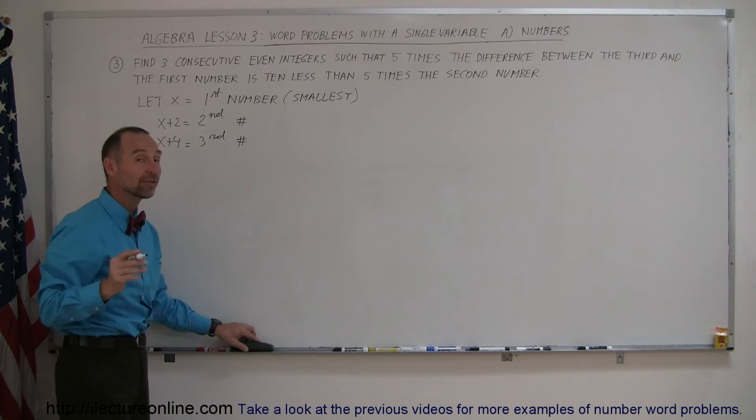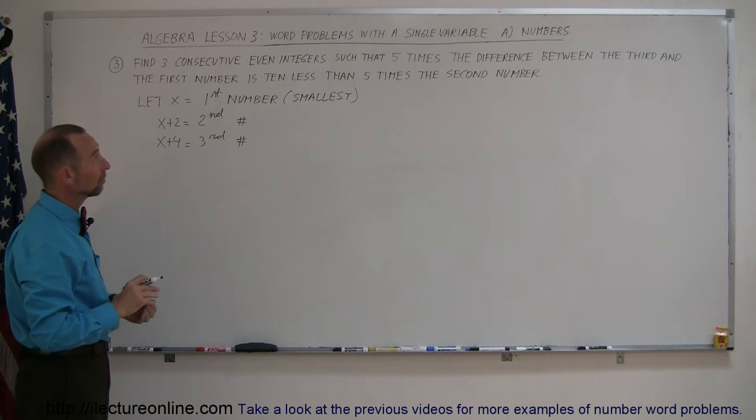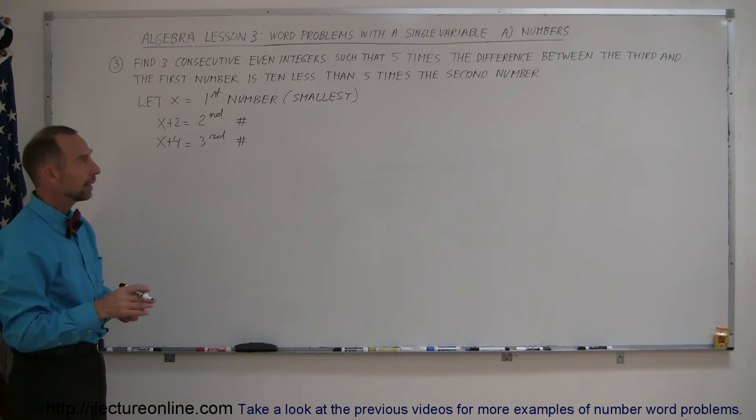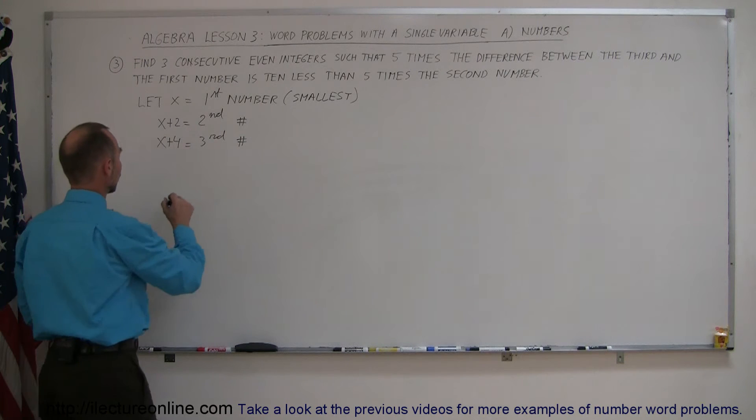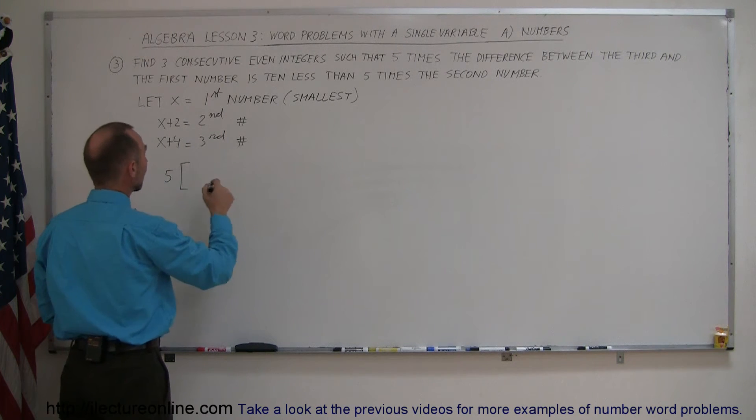Alright, so once we define the three numbers in terms of x, now we can go ahead and try to come up with an equation. And it says that 5 times the difference between the third and the first number.